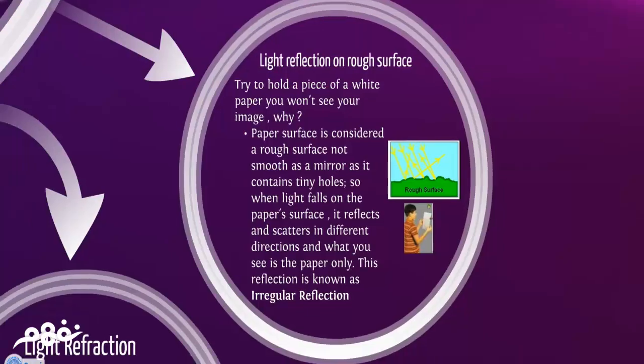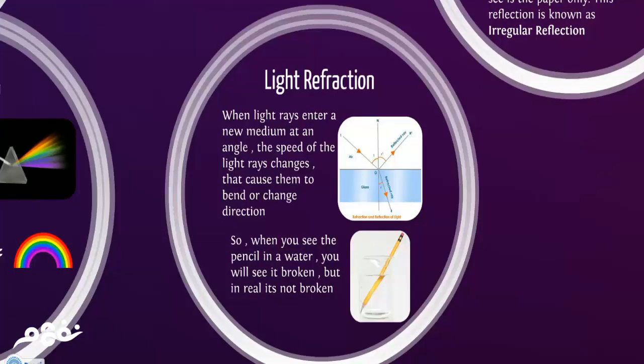Let's go to light refraction. When light rays enter a new medium at an angle, the speed of the light rays changes. That causes them to bend or change direction. This is light refraction. We have an example. We can try it at home. We can put a pencil in a glass of water. You will see that the pencil is broken. But in real, it's not broken. This is due to light refraction.